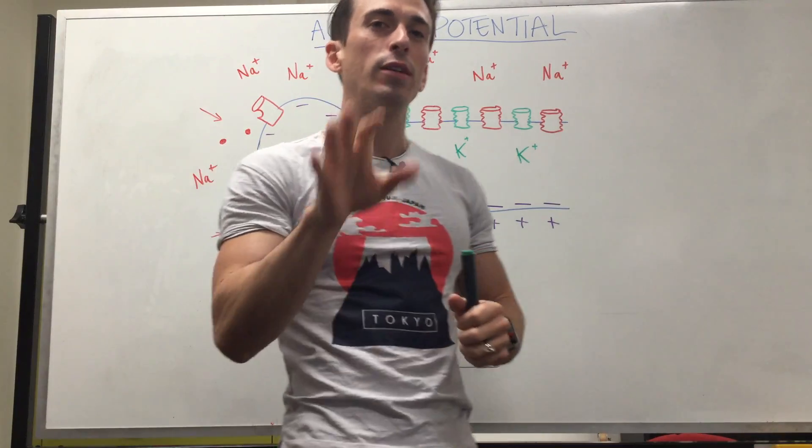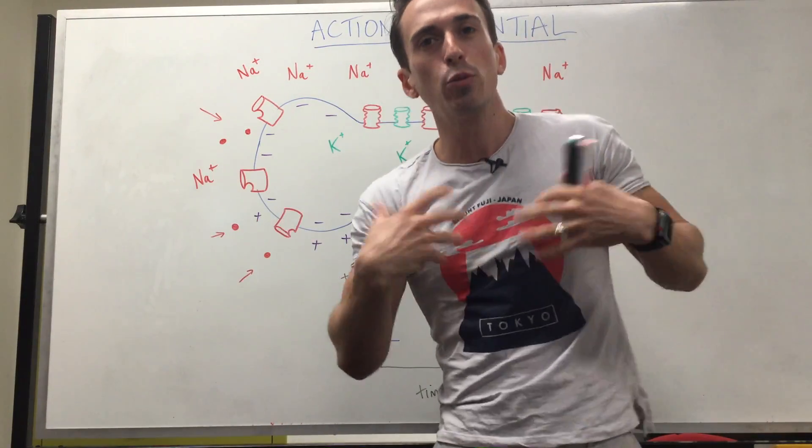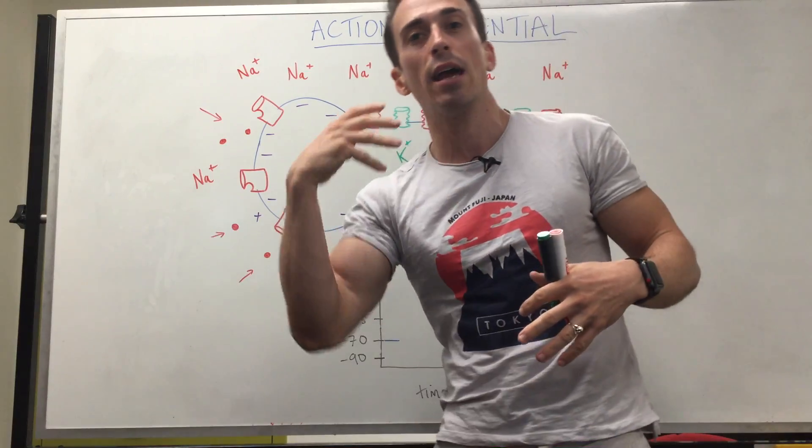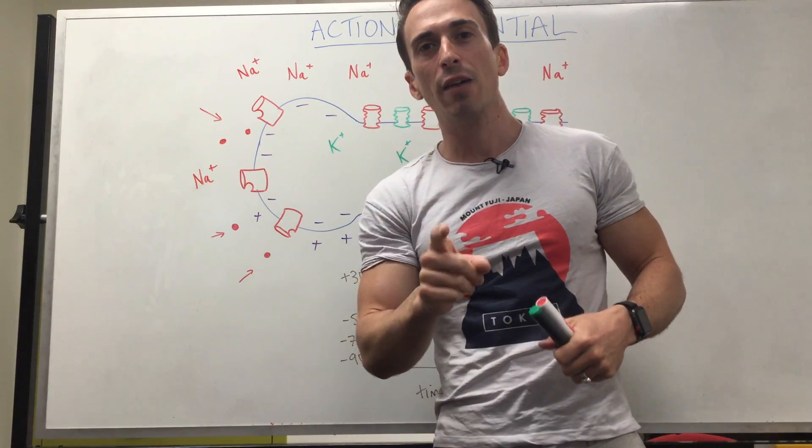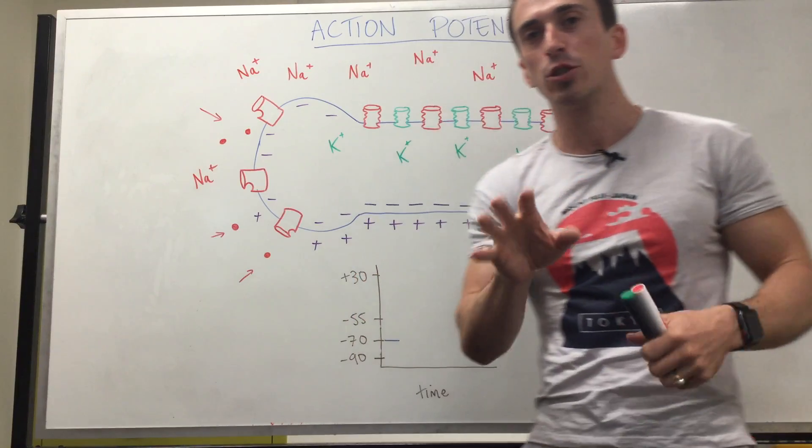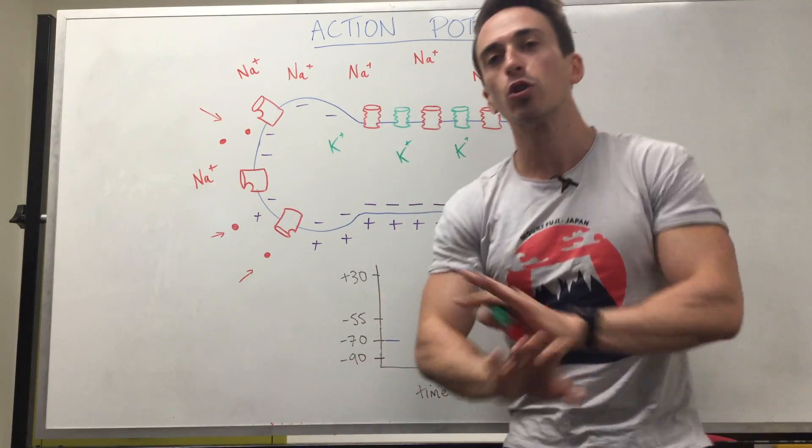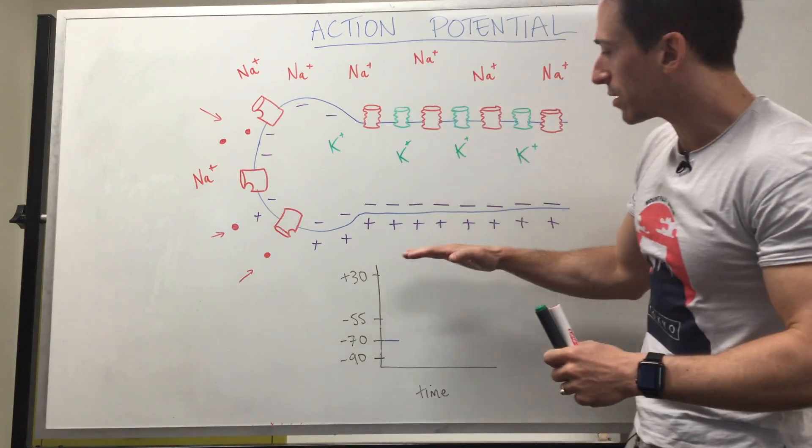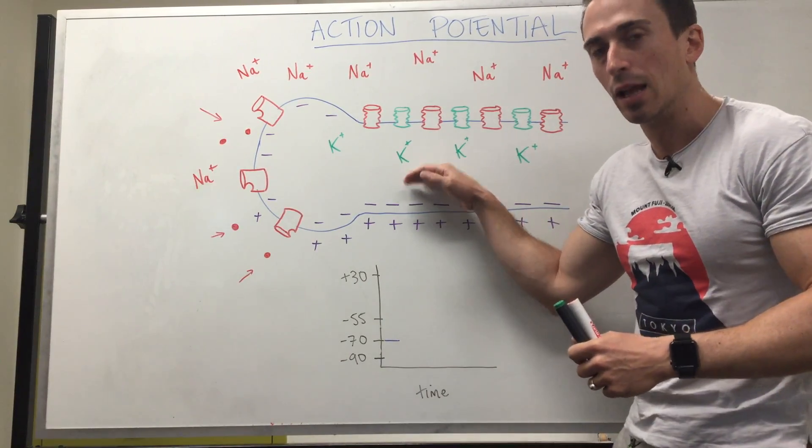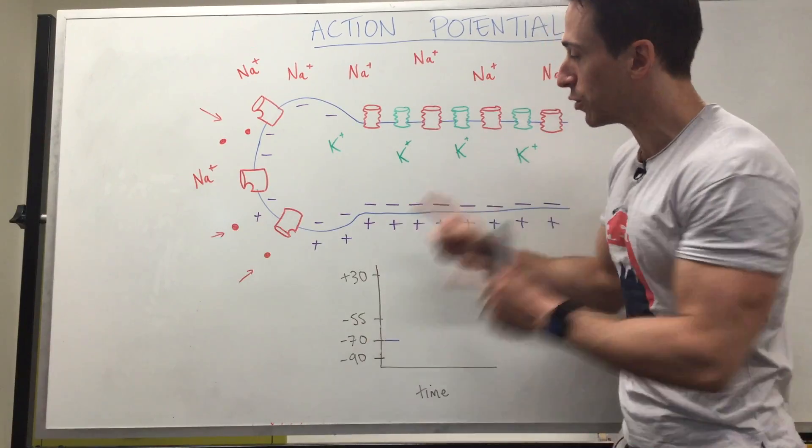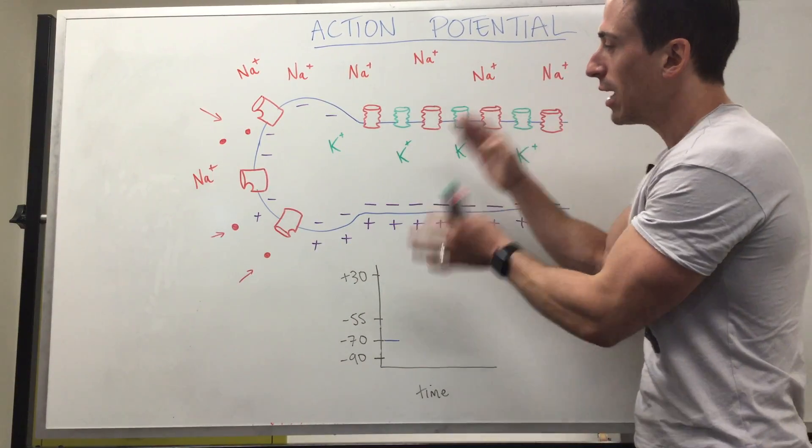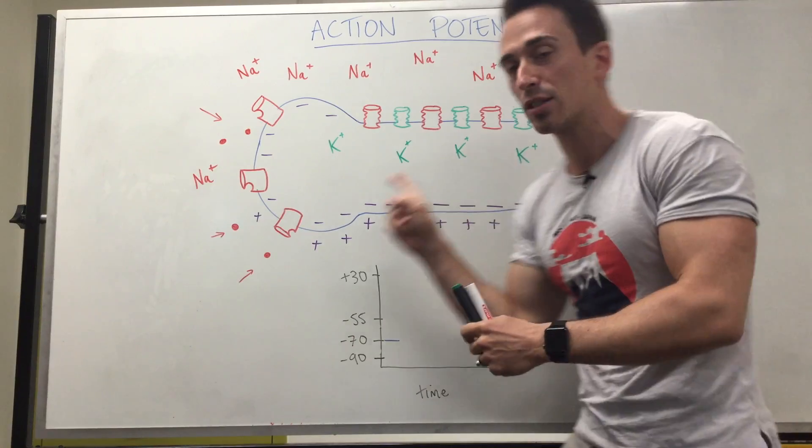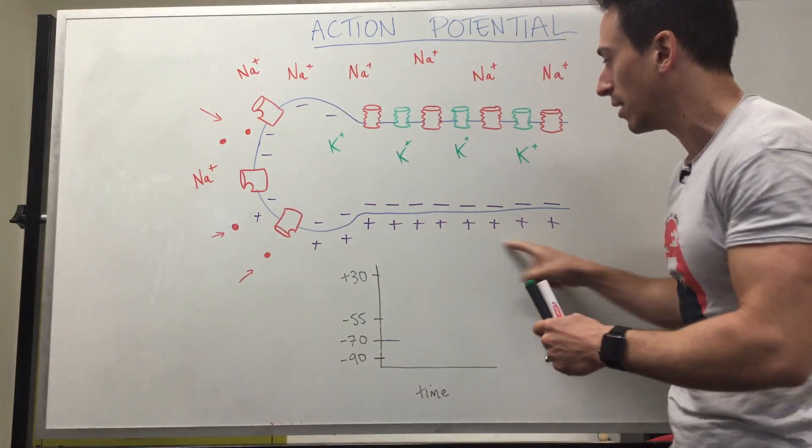Remember that I spoke about in a previous video that our excitable tissues, being our muscles and our neurons, they have what we call a resting membrane potential. It means when they're at rest, not doing anything, there is a charge difference between the outside of the cell compared to the inside of the cell.